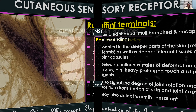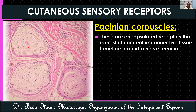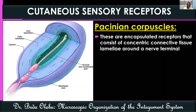Pacinian corpuscles are encapsulated receptors found in deeper zones of the skin. When cut across, they display a characteristic cut-onion appearance — concentric connective tissue lamellae surrounding a central nerve terminal, enclosed within a large outer capsule. The nerve terminal enters through the center and is surrounded by these concentric lamellae of connective tissue.